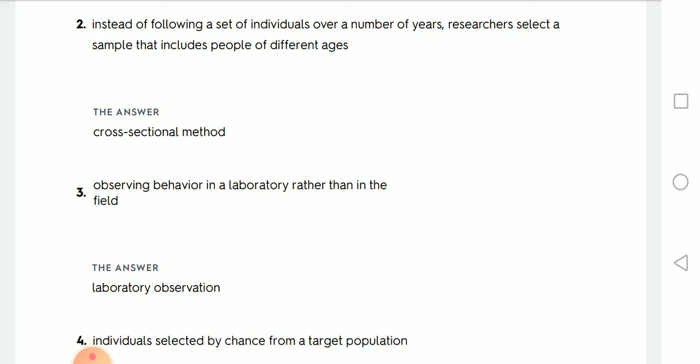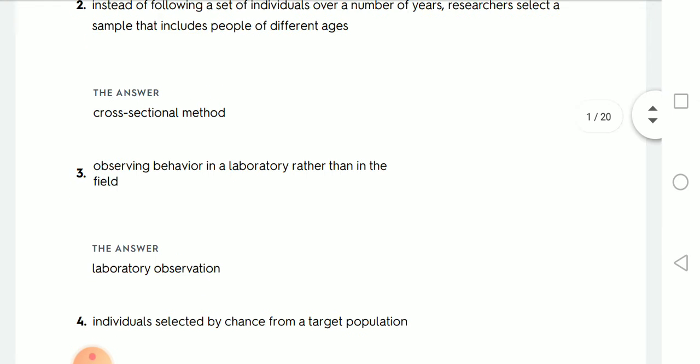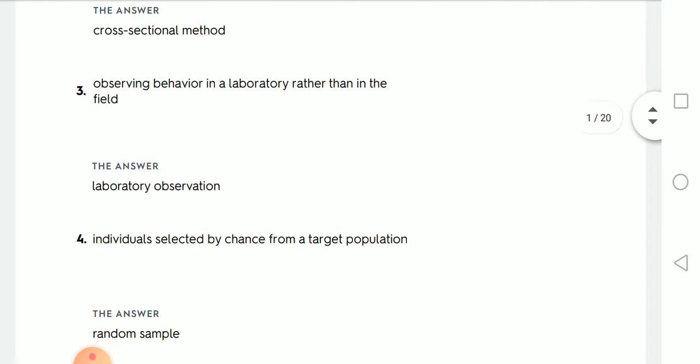Instead of following a set of individuals over a number of years, and this is longitudinal, researchers select a sample that includes people of different ages. This one is the cross-sectional method because the longitudinal was very expensive and it was very hard to follow people.